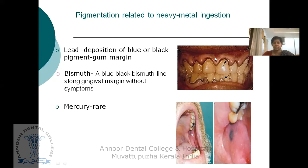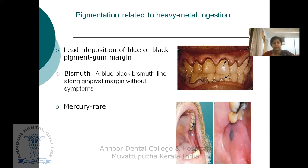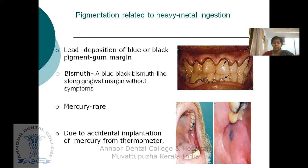Bismuth pigmentation is also blue-black in color along the gingival margin without any symptoms. Mercury pigmentation is very rare and is also known as pink disease, swift disease, or acrodynia. This is due to accidental implantation of mercury, for example from a thermometer, and is one of the potential occupational hazards for dentists and dental teams, mostly arising from improper use of amalgam alloy. All of these are iatrogenic impregnation or occupational hazards.